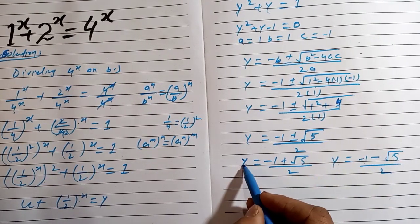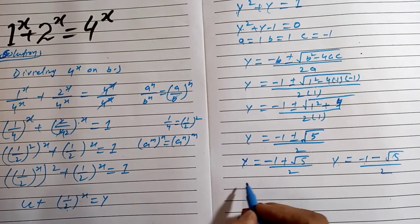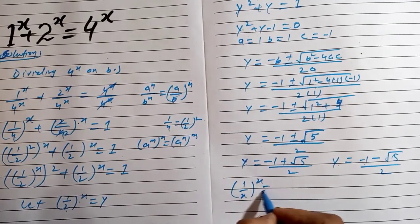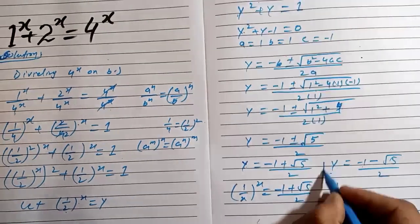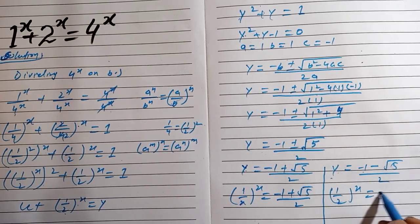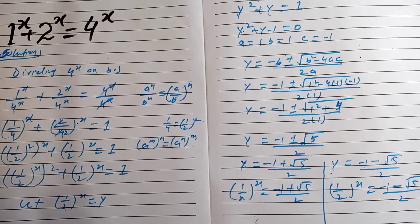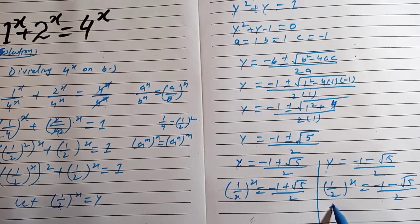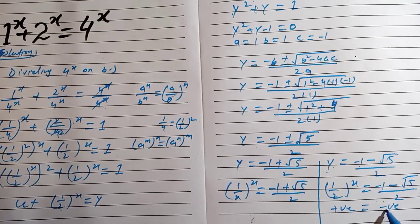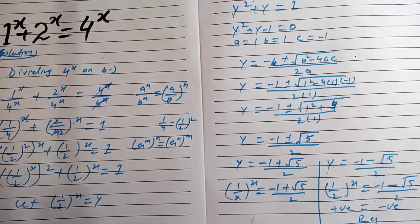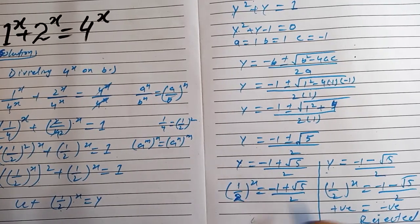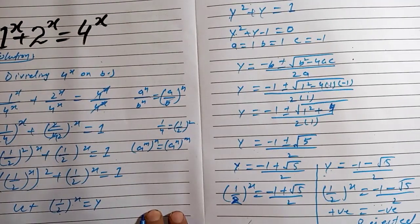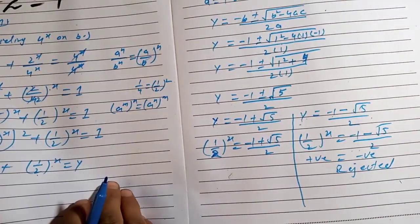Substituting back, we have (1/2)^x = (-1 + √5)/2 and (1/2)^x = (-1 - √5)/2. The left side is always positive, but (-1 - √5)/2 is negative, so this solution is rejected. We keep only Y = (-1 + √5)/2, which can be written as (√5 - 1)/2.